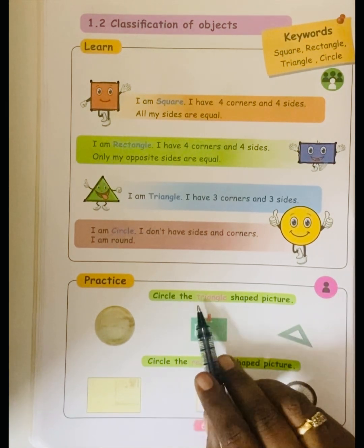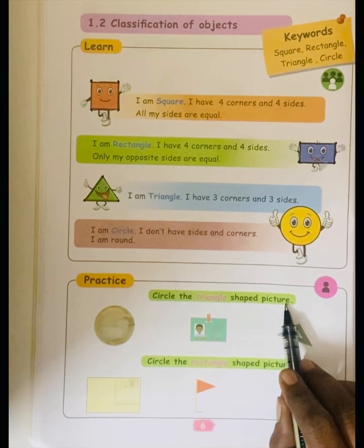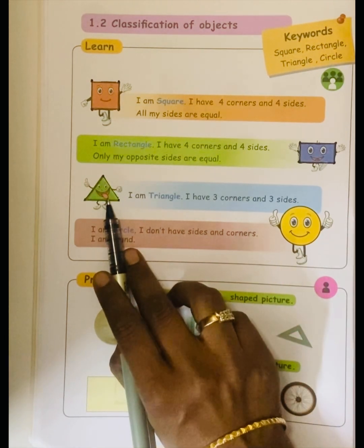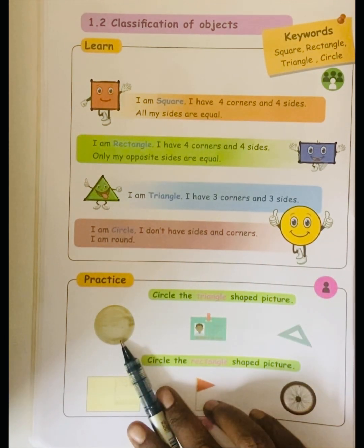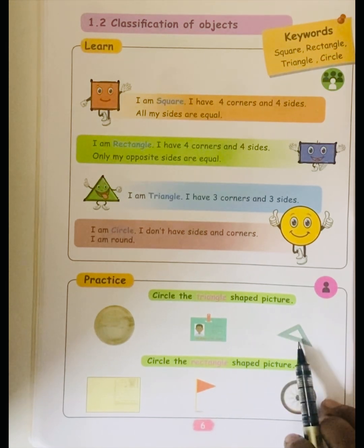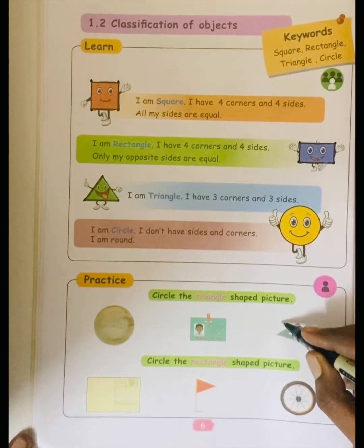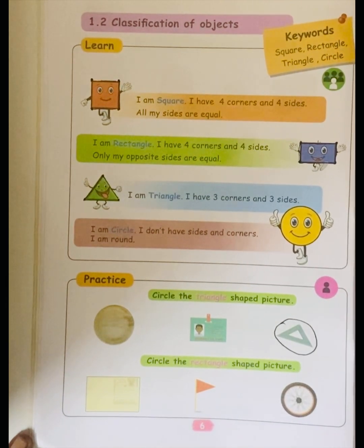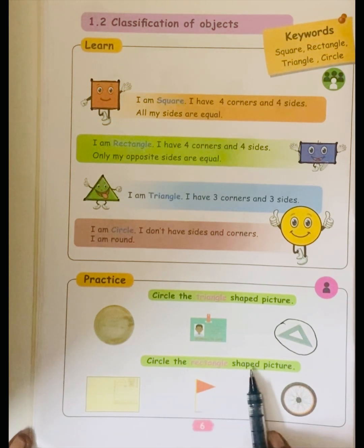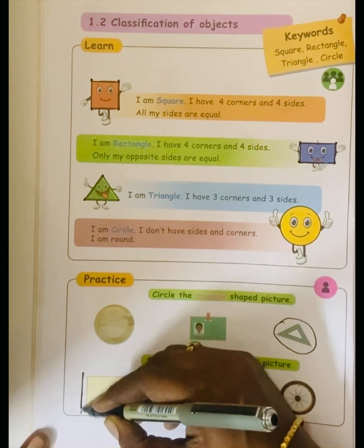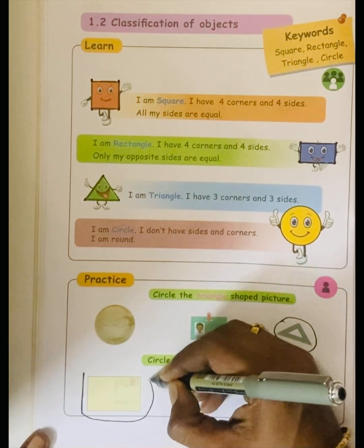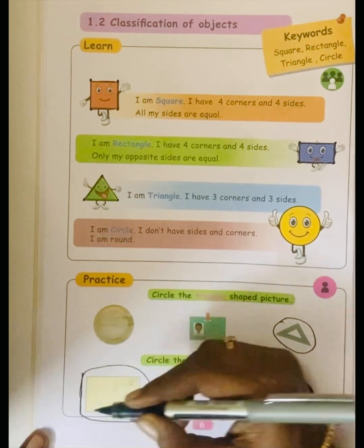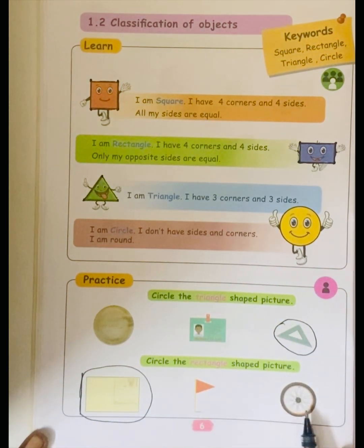Now, we have to circle the triangle-shaped pictures. Triangle — I am a circle, I am a circle. This is a circle. I am a rectangle. I am a triangle. So, we have to circle the set square. I am a geometrical box — set square. Next one: circle the rectangle-shaped picture. See, the postcard — we have to circle the postcard. It is a rectangle.